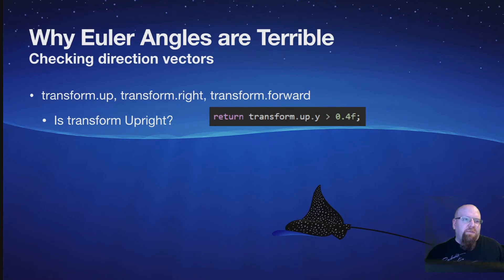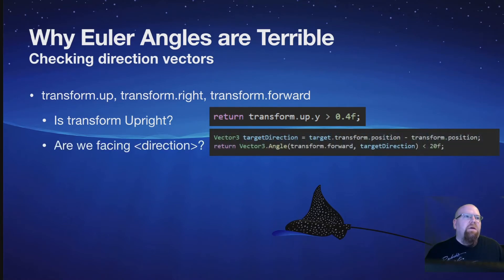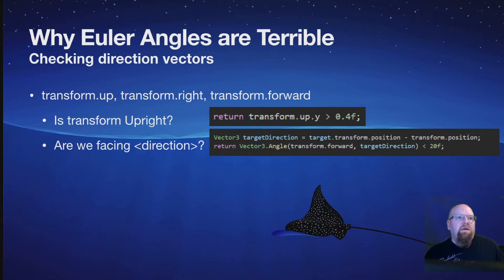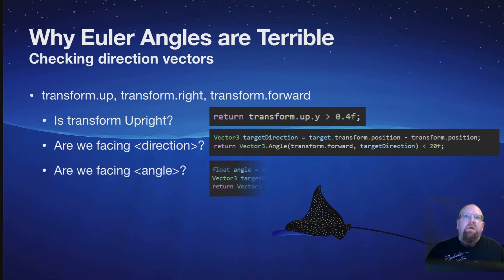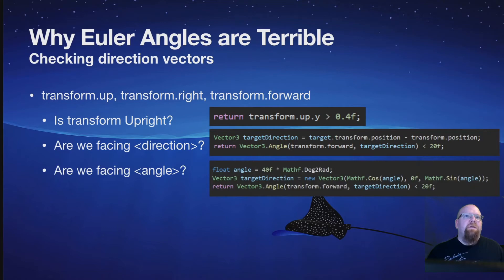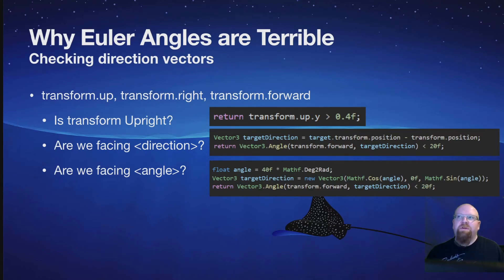If you need to know that you're pointing in a particular direction, you can do something like this: get the target direction by subtracting two positions, then check against Vector3.Angle. That gives you a number in degrees to check against. If you have a particular angle you need to know you're facing, you need to use cosine and sine — cosine goes with the horizontal, sine goes with the vertical — and you do need to remember to use radians, because the Mathf trigonometry functions all use them.